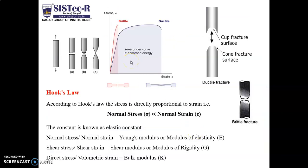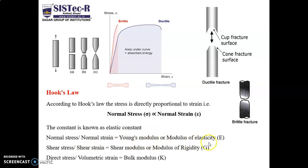In the stress-strain diagram, the vertical line represents stress and the horizontal line represents strain. Red lines represent brittle material and blue lines represent ductile material. According to Hooke's law, normal stress is directly proportional to strain. Removing the proportionality, we get: normal stress divided by normal strain equals Young's modulus or modulus of elasticity; shear stress divided by shear strain equals shear modulus or modulus of rigidity; and direct stress divided by volumetric strain equals bulk modulus.